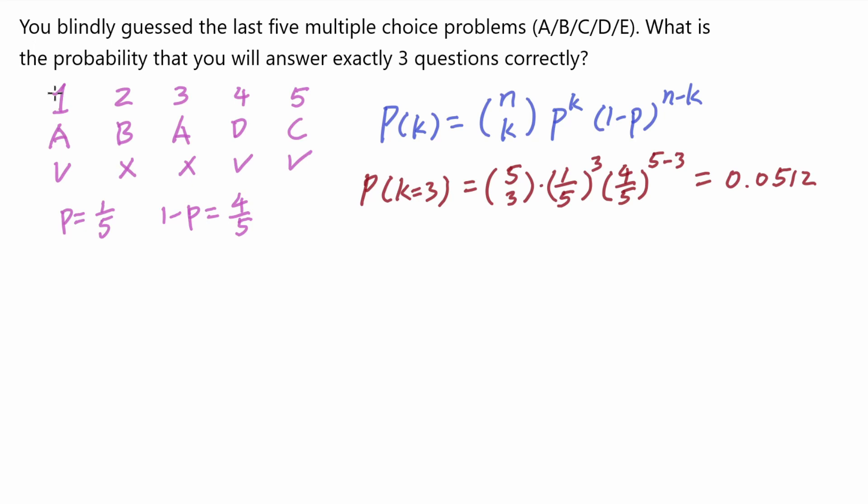Why does it work this way? Let's go through the logic. How many ways are there to answer five questions and get three of them correctly? You could be getting the first question right, second question right, then the third one wrong, fourth one wrong, and the fifth one wrong.